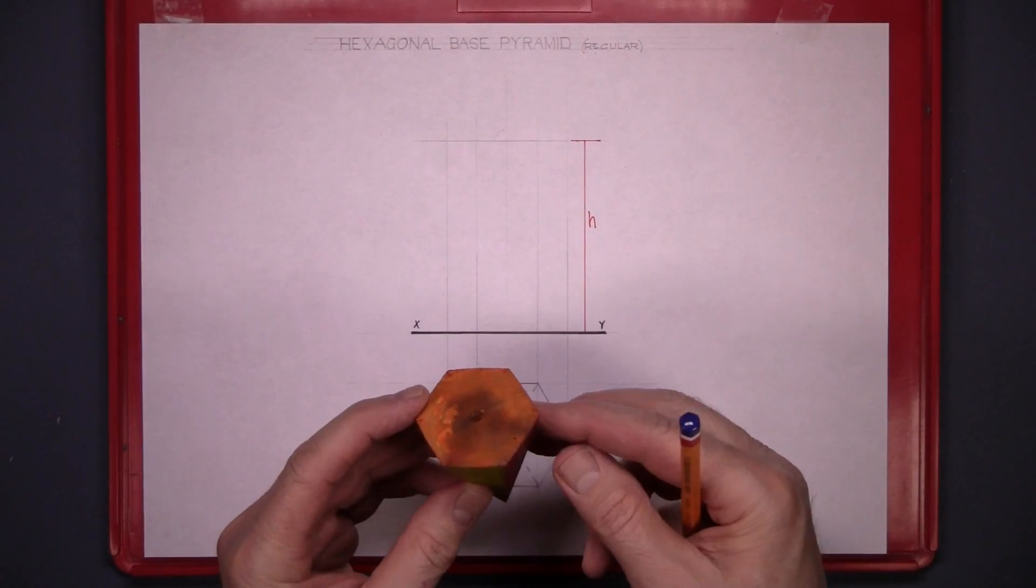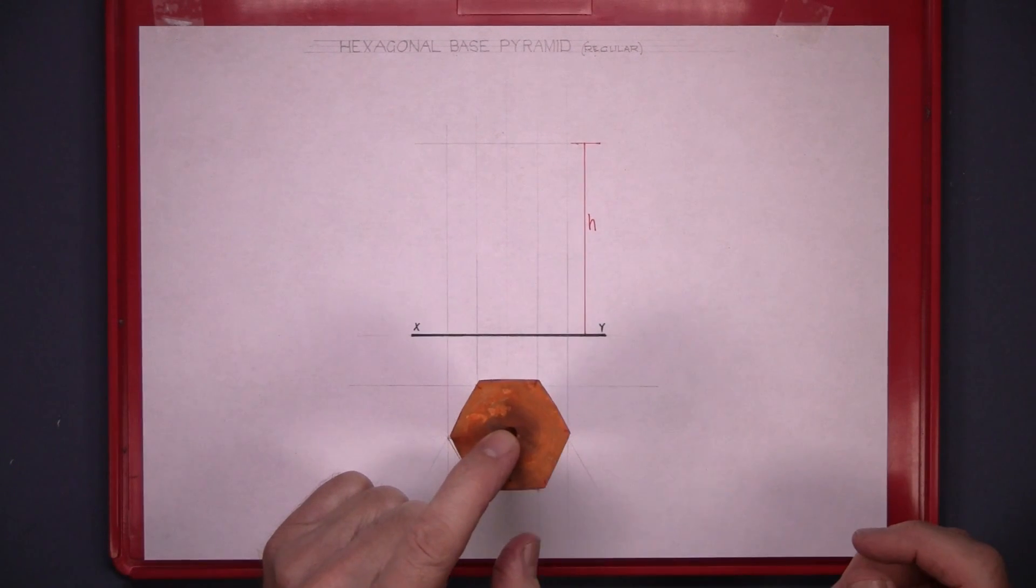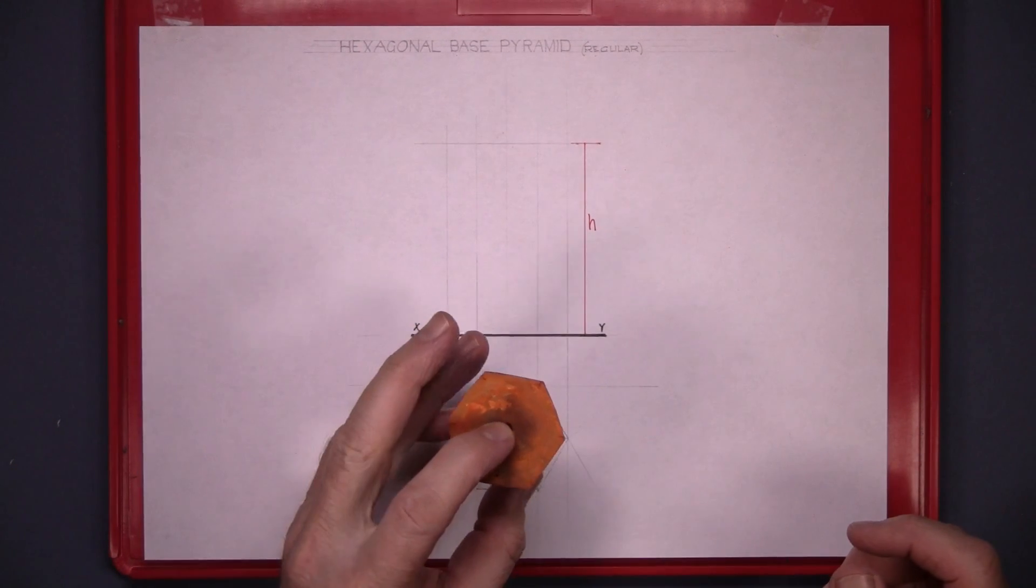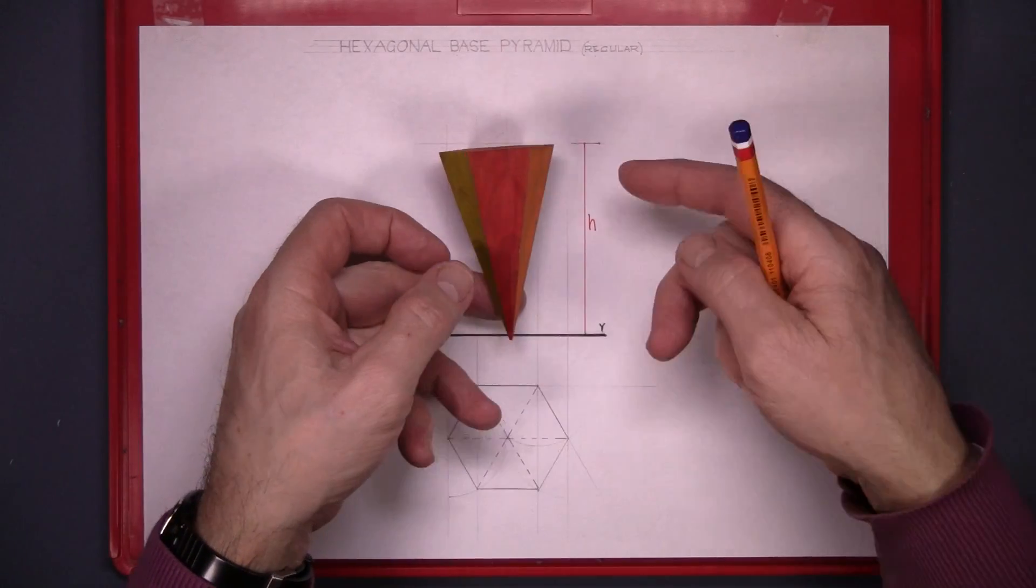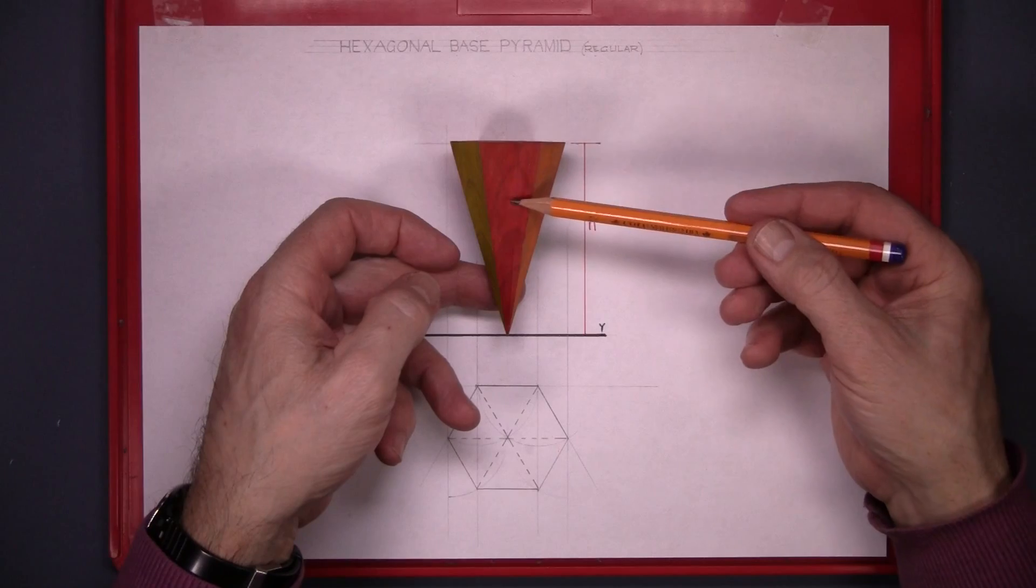And now we're looking directly down on the base. In elevation it's going to look like this. We see three surfaces.